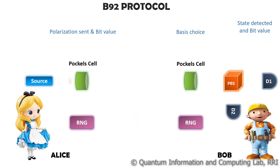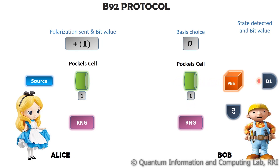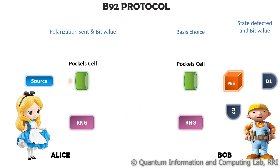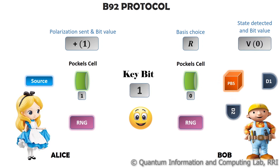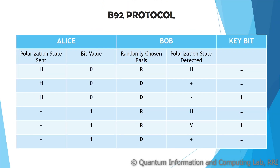In the other case, where Alice sends diagonally polarized photons and Bob measures in a diagonal basis, Bob detects the polarization state correctly and no keybit will be generated. But unlike the previous scenario, if the randomly chosen basis of Bob happens to be rectilinear, with probability half the detected state will be V and a keybit 1 will be successfully generated. This table shows all the possible scenarios that might occur in the B92 protocol.